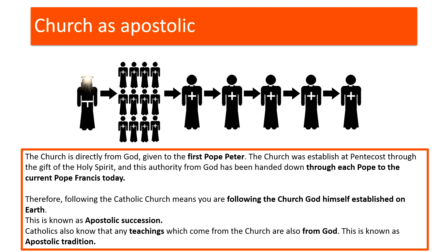Finally, the church is apostolic. They identified Peter as their leader or their first pope. That authority was handed down from the first pope to the next, all the way down to Pope Francis today. Therefore, following the Catholic Church means that you are following the church God himself established on earth — and that is known as apostolic succession.